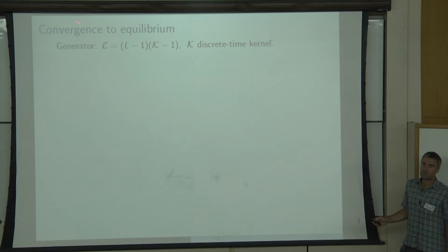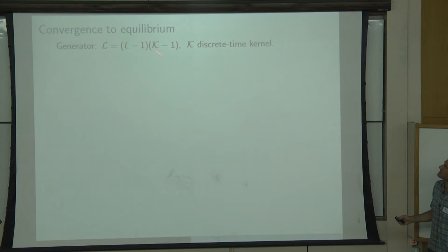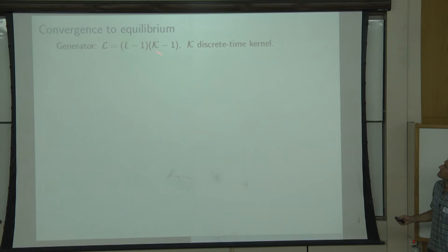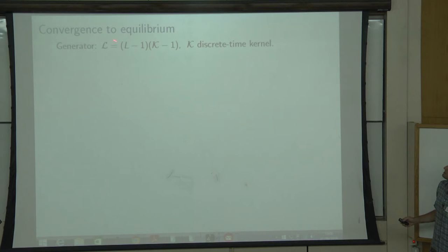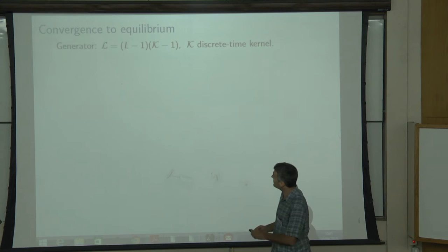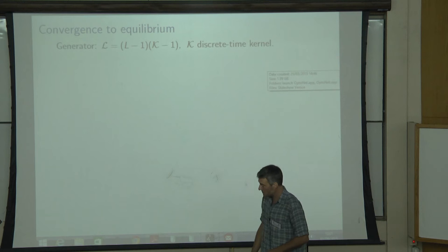I also want to use some analytical tools, so let's introduce the generator. In this setting, we have the discrete kernel K. Take K minus the identity, and multiply by L minus 1. This gives our generator — it's a matrix — and reversibility just means it is a symmetric matrix.